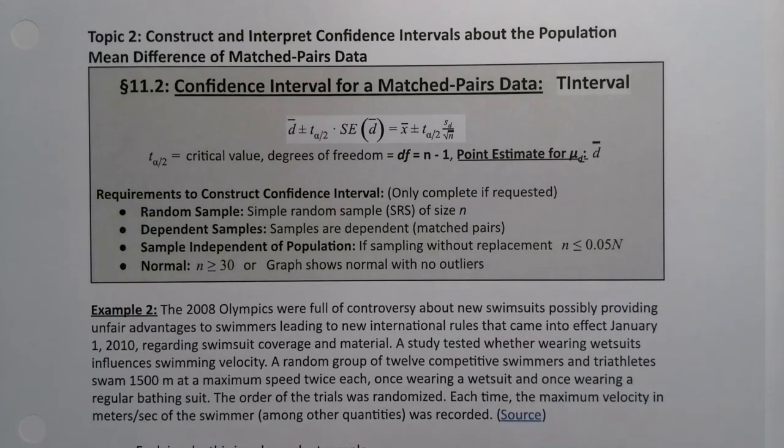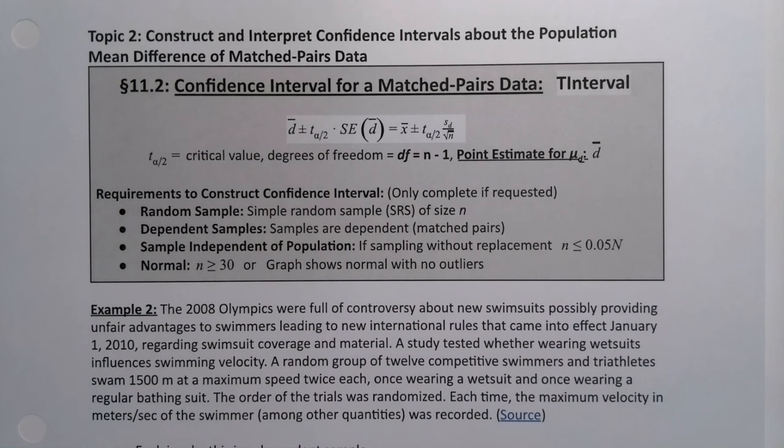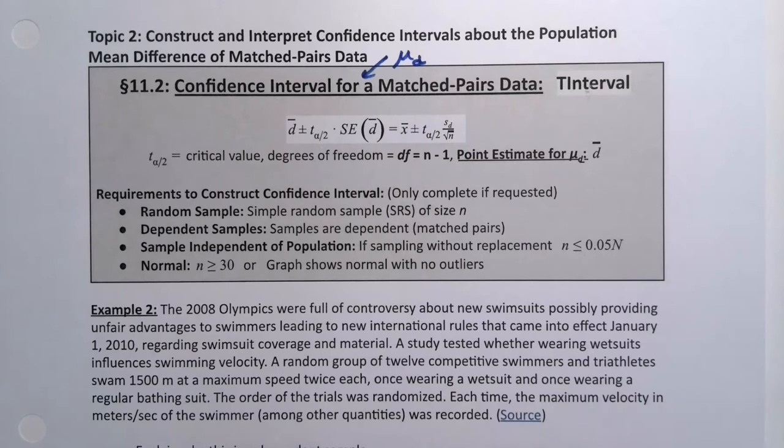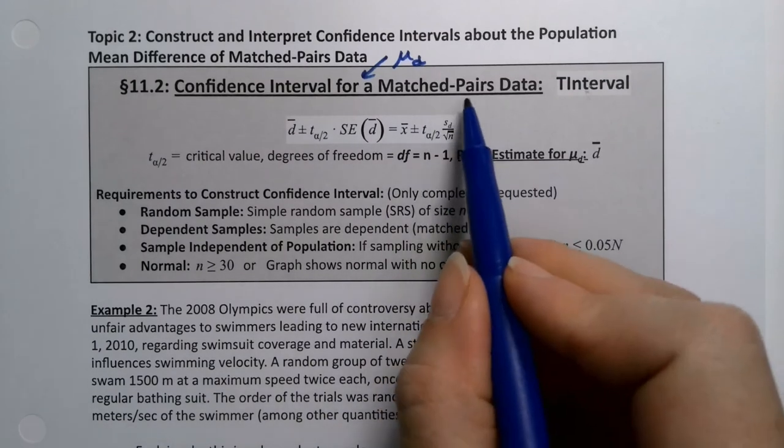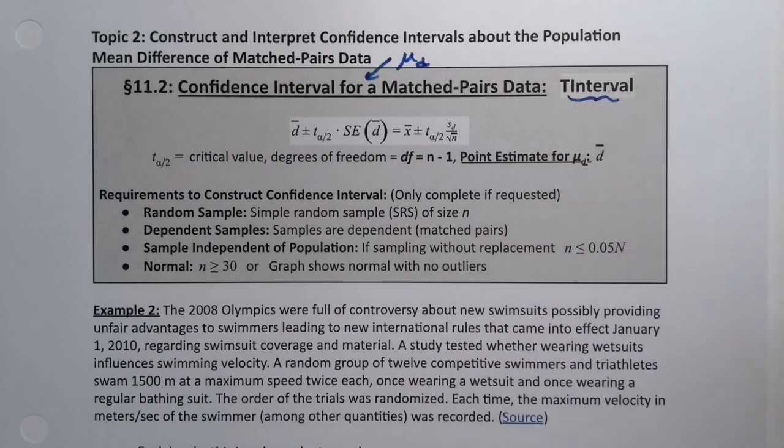If we can conduct a hypothesis test on differences between matched pairs data, then we can also create a confidence interval for the differences of matched pairs data. And that's exactly what we're going to do here. So you're creating a confidence interval for the mean, for mu_d, the mean difference of matched pairs data. And this would be t interval on the calculator, but it would be on the differences.